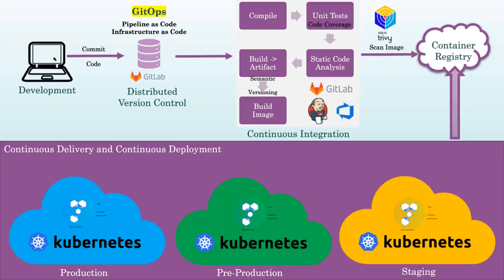GitOps is a way of managing and deploying applications and infrastructure using Git and Git workflows. It involves storing all configuration and infrastructure definitions as code in a Git repository, and using Git-based tools and processes to manage changes, track history, and automate deployment.